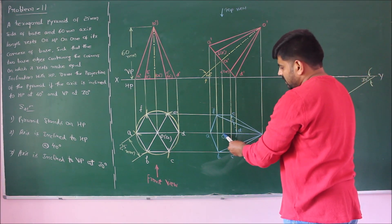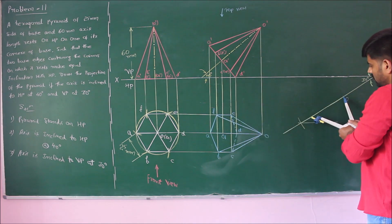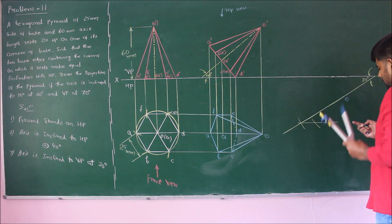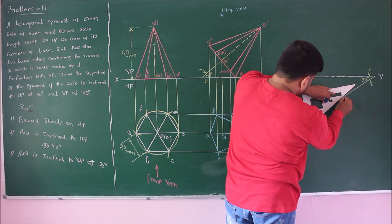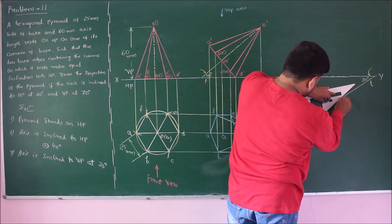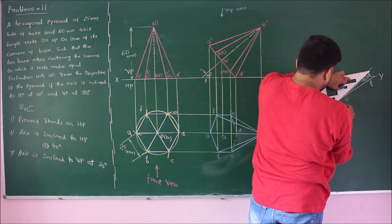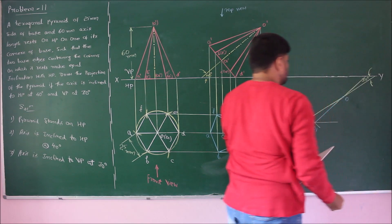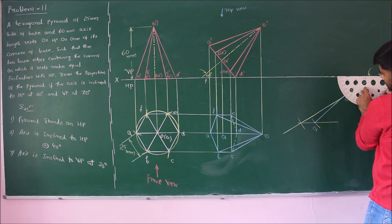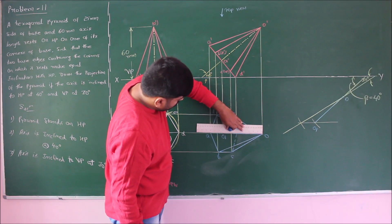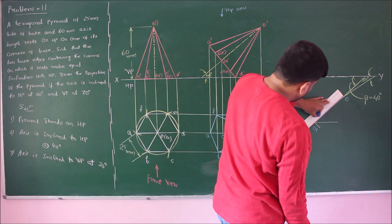Mark point o as reference. Using a compass, measure the true length of 60 mm and transfer it to the 30 degree line. At this new point, fix the locus. Then measure the apparent axis length, and fixing the same o as reference, intersect the new locus. The intersection point is o1. Join o to o1 and extend to intersect the XY line to measure the beta angle, which turns out to be 40 degrees.